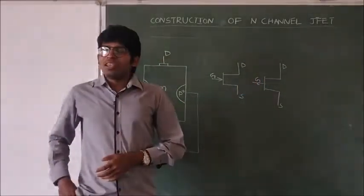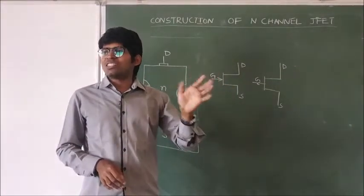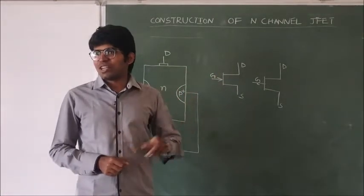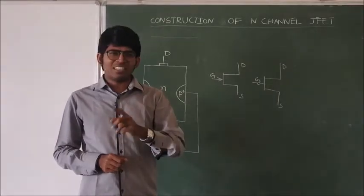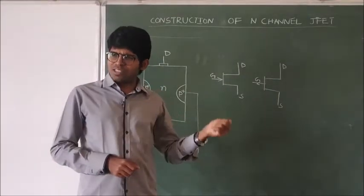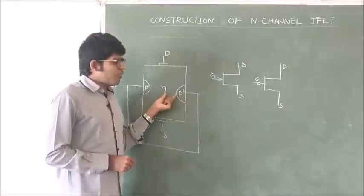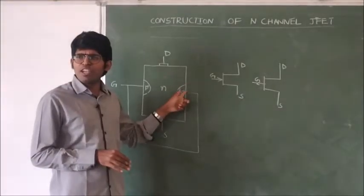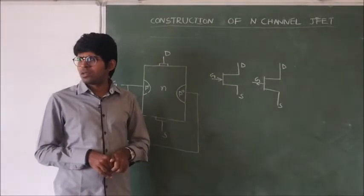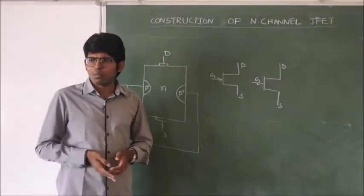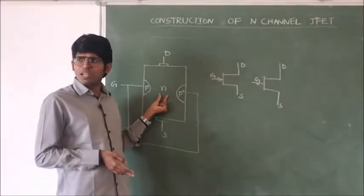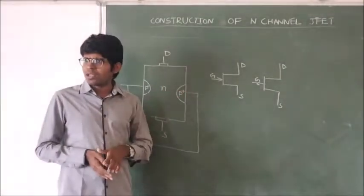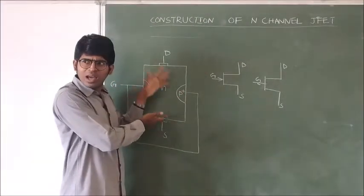In this class we are discussing about the construction of N-channel JFET. JFET means junction field effect transistor, and what is this N-channel we will discuss here. The N-channel JFET is formed by joining an N-type semiconductor between two heavily doped P-type semiconductors. In this diagram, the two P-plus regions appear smaller compared to the N region, meaning the N region appears very large compared to P.